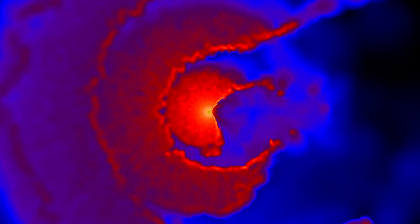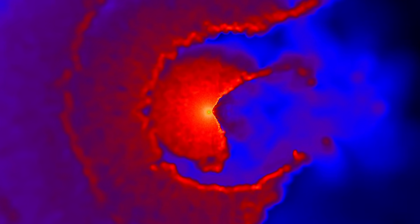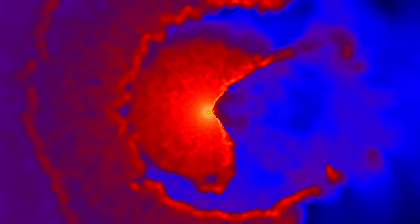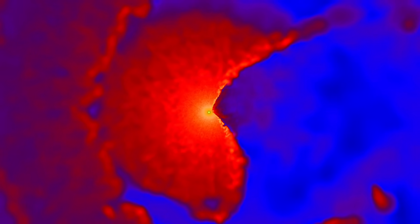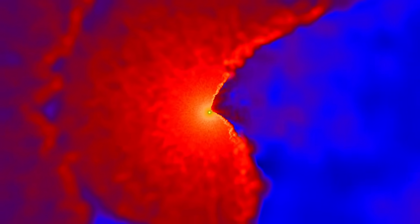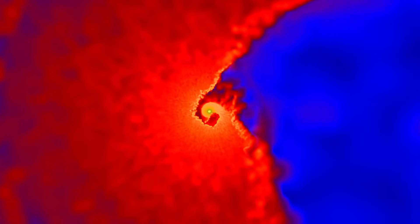Recent observations have helped theorists refine computer models of this interaction. Here, darker colors indicate lower gas densities around the stars, while the stars themselves appear as black circles.